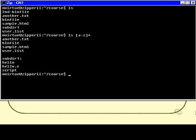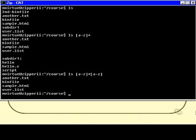Or I could say ls [a-zA-Z]*[a-zA-Z]. That means match any file or directory that begins with a letter and ends with a letter. And there's only four of those because subdir1 ends with a 1. Are you getting the idea?